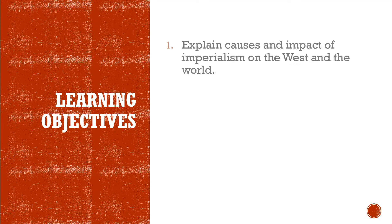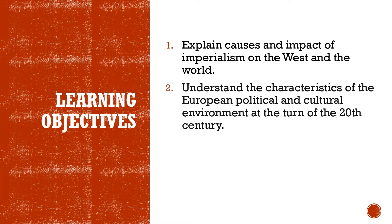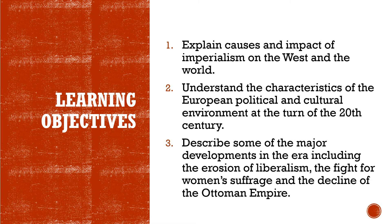The learning objectives for this unit are: 1. Explain the causes and impact of imperialism on the West and on the world. 2. Understand the characteristics of the European political and cultural environment at the turn of the 20th century. And 3. Describe some of the major developments in the era, including the erosion of liberalism, the fight for women's suffrage, and the decline of the Ottoman Empire.